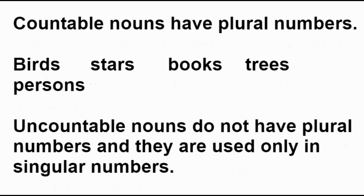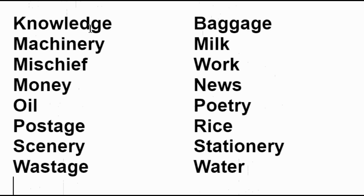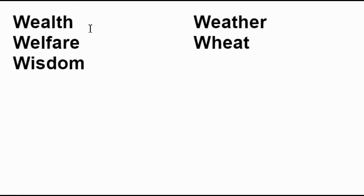Countable nouns have plural numbers — birds, stars, books, trays, persons, etc. Uncountable nouns do not have plural numbers and they are used only in singular numbers. Examples of uncountable nouns: accommodation, advice, baggage, bedding, bread, equipment, fuel, furniture, gold, hair, information, jewelry, knowledge, milk, mischief, money, news, oil, poetry, postage, rice, scenery, water, wealth, weather, wisdom, etc.